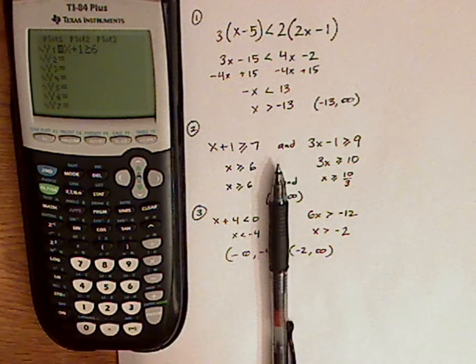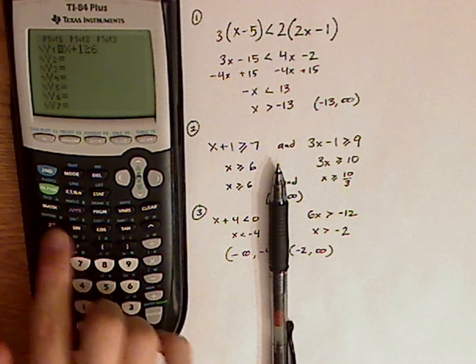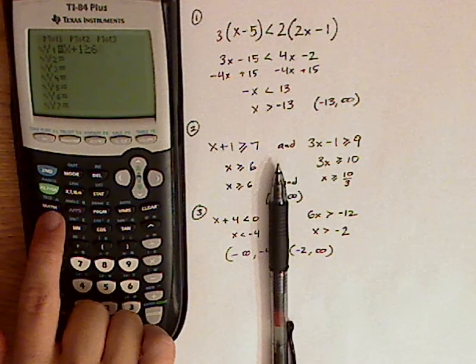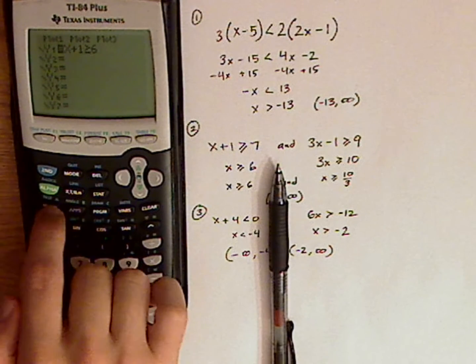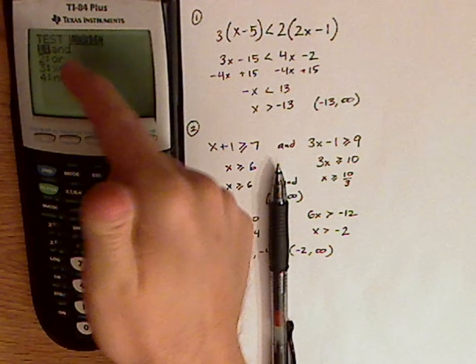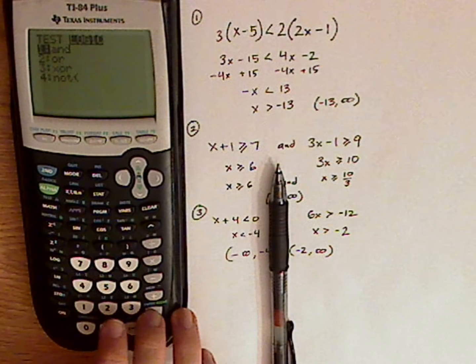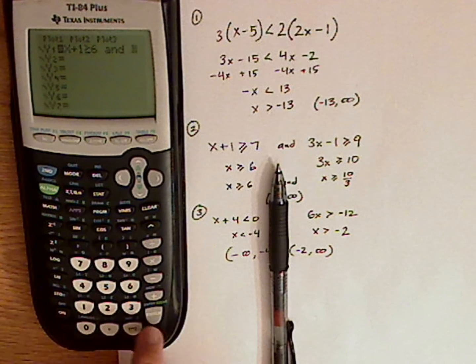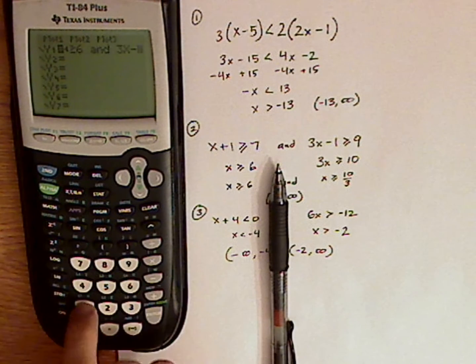Now I need the and. Now, the and is found in the same place as the inequality signs. So you want to go to second, and then push math. Math, that will give you tests. Then go to logic, and that's where you're going to find your and and your or. So click and.